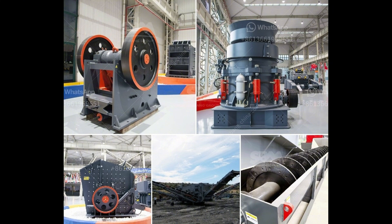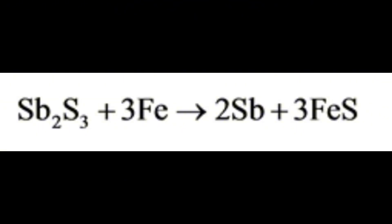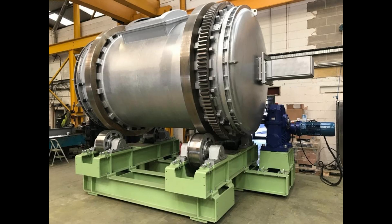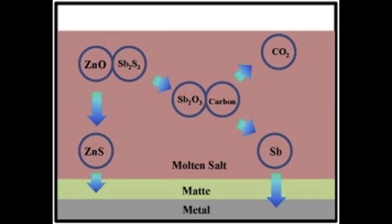Antimony is produced primarily from the mineral stibnite, SB2S3. Stibnite is mined and then processed to extract the antimony. The most common method of extraction is smelting, which involves heating the stibnite in the presence of oxygen to produce antimony trioxide, SB2O3. The antimony trioxide is then reduced to antimony metal using a reducing agent, such as carbon or hydrogen.